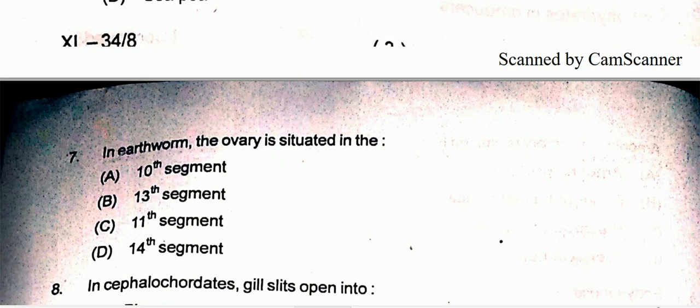Coming to question seven — it's a very easy, direct question. In earthworm, the ovaries are situated in the 13th segment. Ovaries are present in the 13th segment of earthworm.